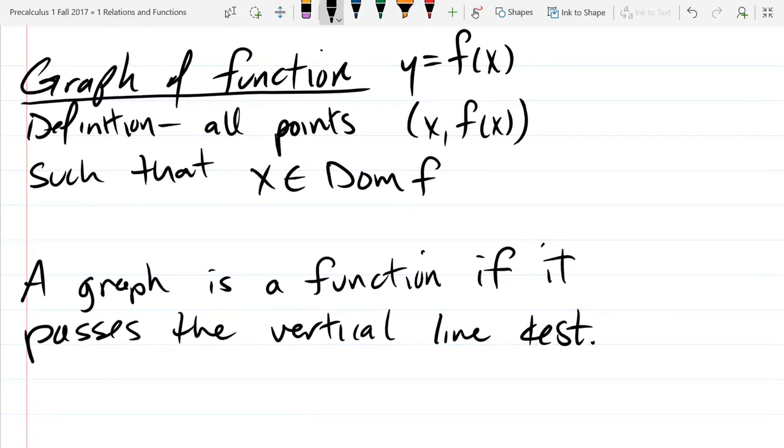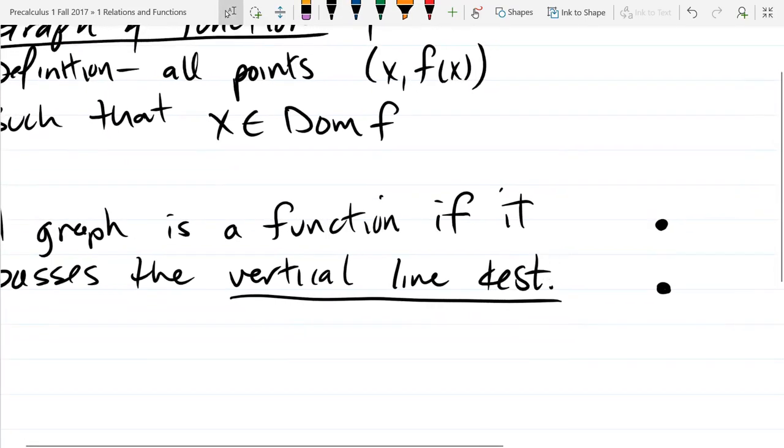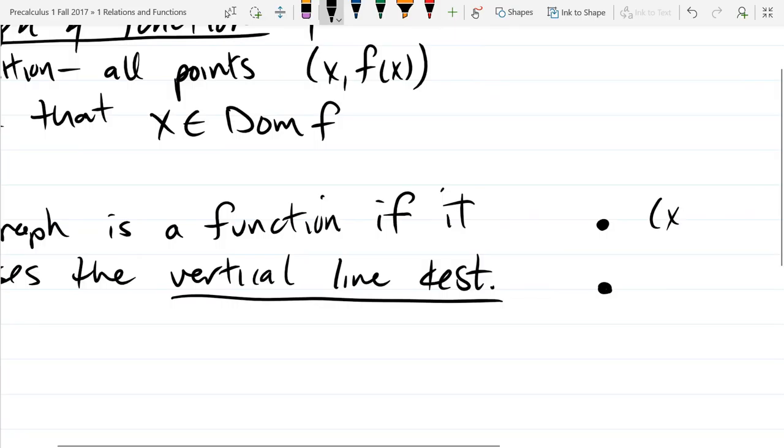So what does it look like to pass the vertical line test? So instead of talking about what it looks like to pass, we'll look at what it looks like to fail. So we know if there are two points that have the same x-coordinate and different y-coordinates, they will appear above and below each other like this. So if we have two points like this, and let's say we have (x₁, y₁) and the other is (x₁, y₂).